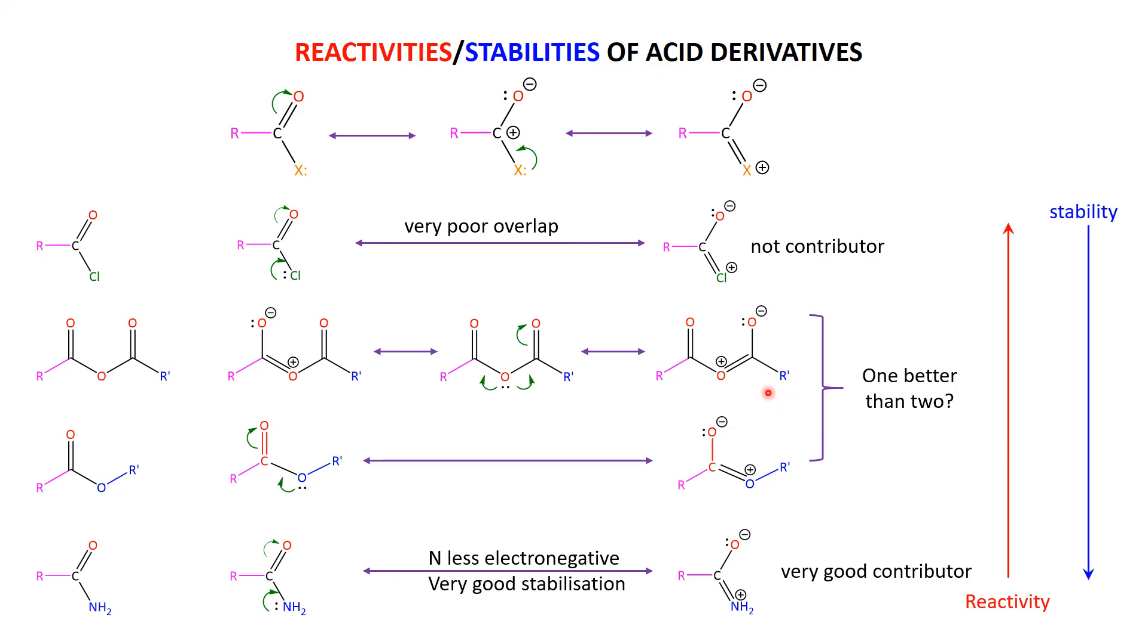Now, you can take that as you want. There is a much better explanation of why the anhydrides are more reactive than the esters when we start thinking about the reaction mechanism. What I do want you to get out of this, though, as it certainly describes and explains why the acid chlorides are the most reactive by quite a long way, and the amides are the least reactive by quite a long way. No good overlap here. Good overlap for the other threes. Less electronegative for the amide compared to the oxygen.